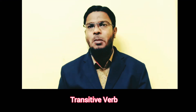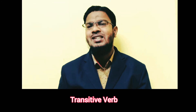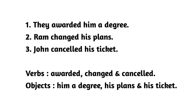First, let me go to transitive verbs. Look at these sentences. Number one: they awarded him a degree. Number two: Rom changed his plans. Number three: John cancelled his ticket. You can notice the verbs awarded, changed, cancelled in the sentences are followed by objects.